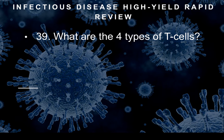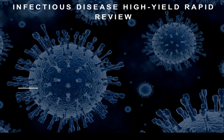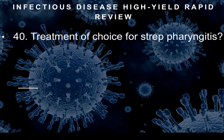Question thirty-nine: What are the four types of T cells? That would be helper, cytotoxic, suppressor, and killer T cells. Question forty: Treatment of choice for strep pharyngitis? They'll give you a stem with strep pharyngitis and ask how you want to treat it — the answer is penicillin VK. Penicillin VK treats strep pharyngitis.